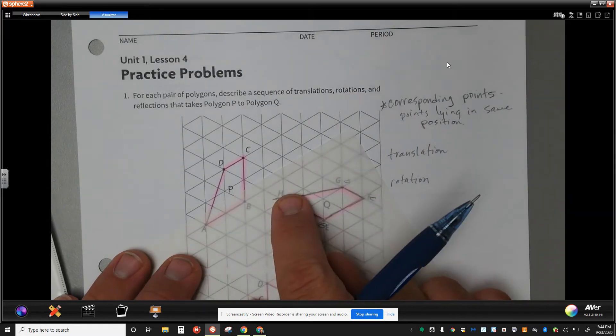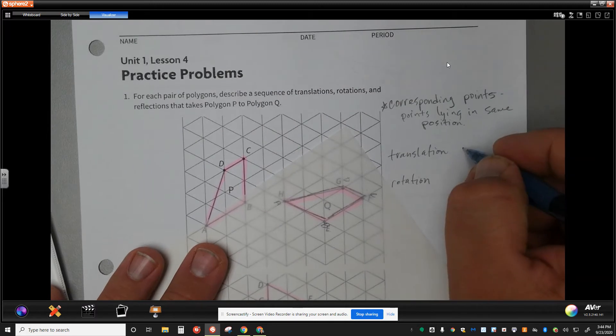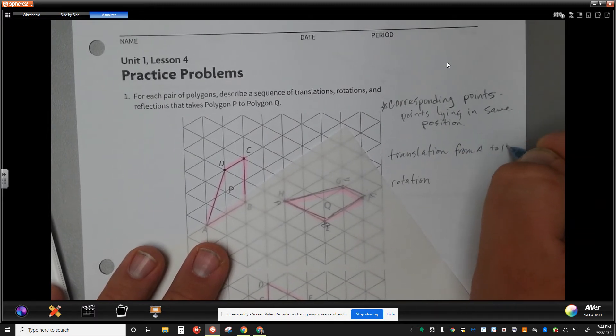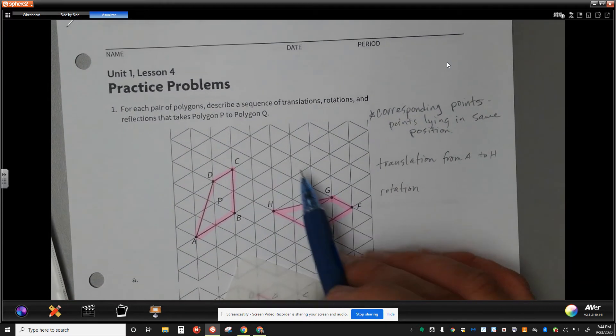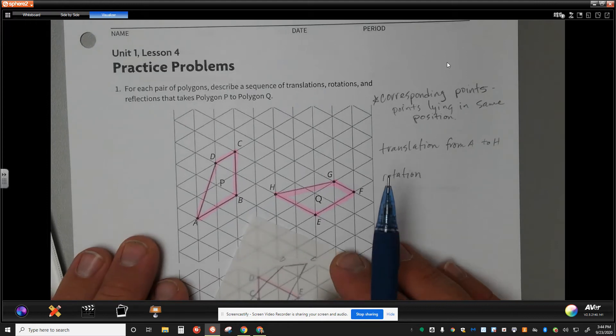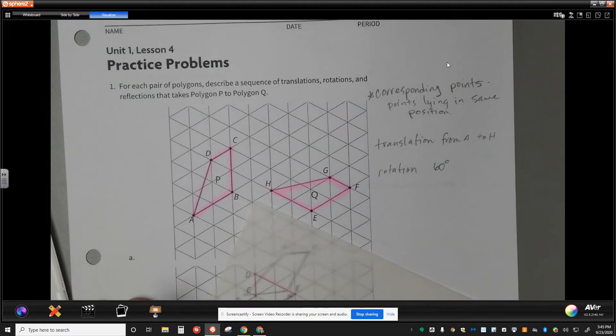So when I look at my translation, I see like A and H seems the most reasonable to me. So I'm going to talk about my translation from A to H. And then when I'm looking at the rotation, I'm going to remember that I'm on this isometric paper. And so my rotations have to be in measurements of 60 degrees. Play with that.